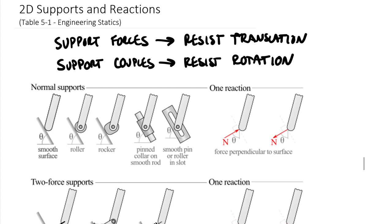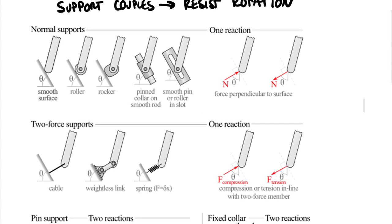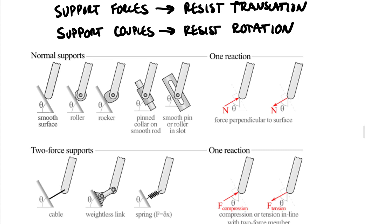For two-dimensional supports and reactions, there are only a few support couples — those can be found toward the bottom of this table — but there are quite a few different kinds of support forces. I've clustered these into types based on what reactions come from each support. Fundamentally, the physical problem-sketch drawing will be on the left, and its implication on your free body diagram — the forces and couples from that physical connection — will be on the right.